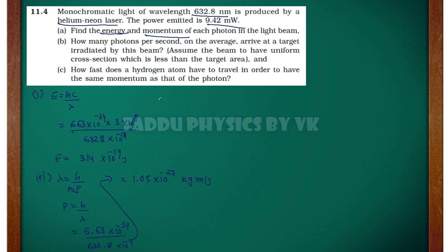Now second question is a little interesting question. Question number B. How many photons per second on average arrive? Number of photons. At a target irradiated by this beam. How many photons are here?